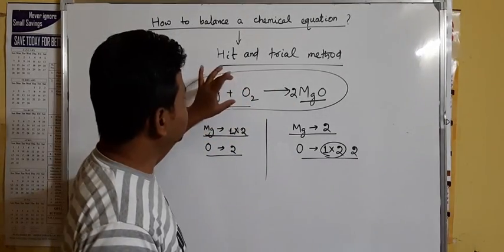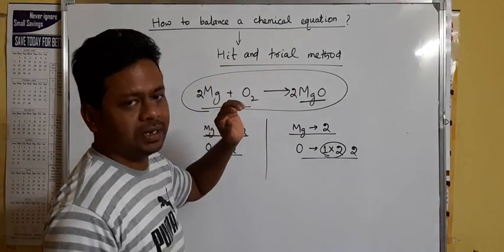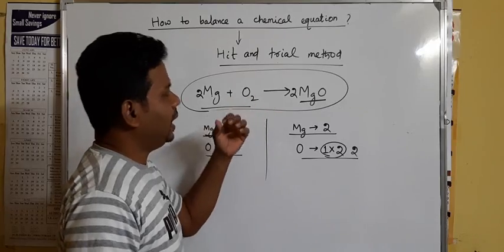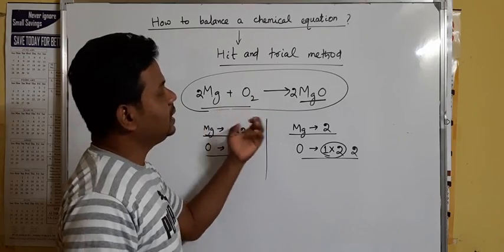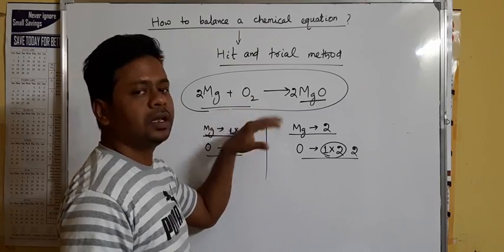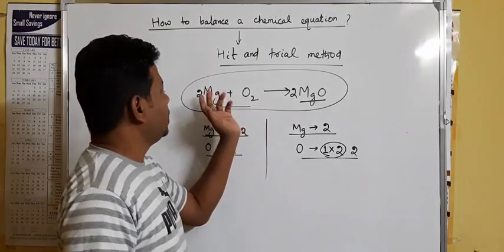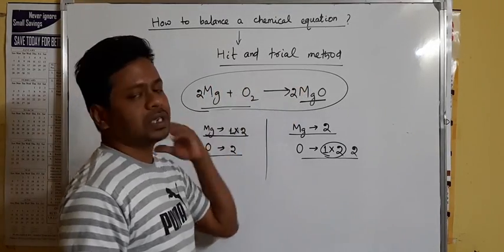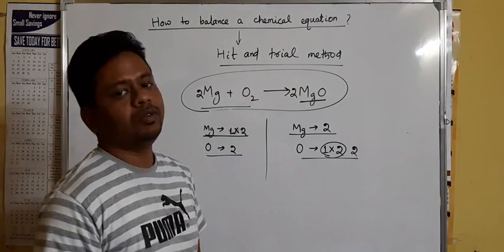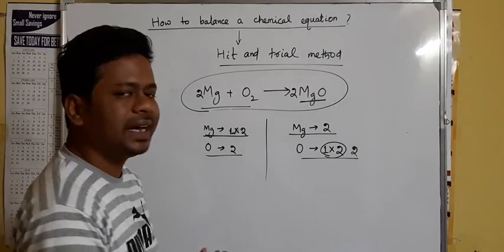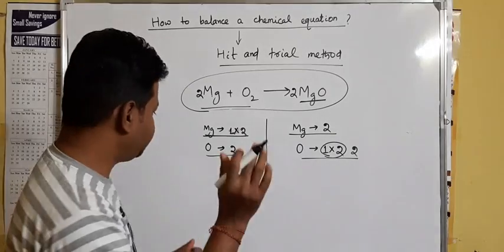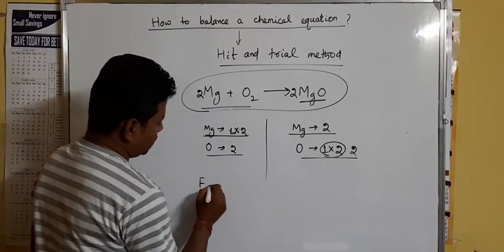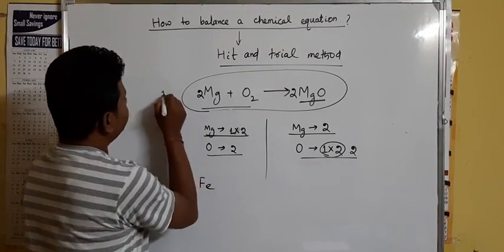This method is called the hit and trial method. You multiply numbers and continue until the number of atoms on both sides are equal. This is the first example. We will now take another example.